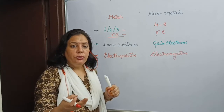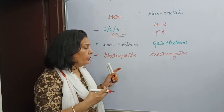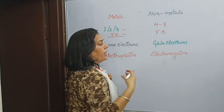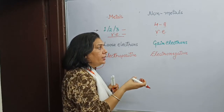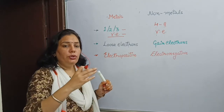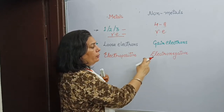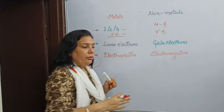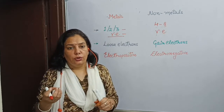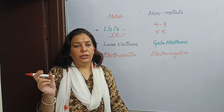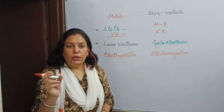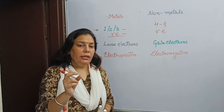Elements which lose electrons during a chemical reaction are electropositive in nature. In the case of non-metals, because 4 to 8 electrons are present, they have a tendency to gain electrons to complete their outermost shell. This is the reason that non-metals are electronegative in nature — when they react with any other element they tend to gain electrons. So metals have a tendency to lose electrons and non-metals have a tendency to gain electrons, and this is the basic concept of the formation of ionic compounds.